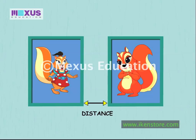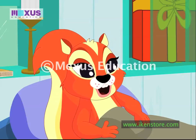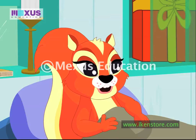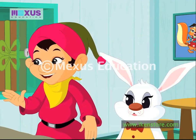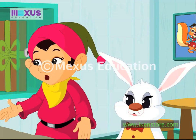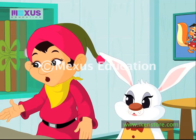So, is this the distance that we have to measure now? You are right, Bunny. Now, observe how I measure the distance between the frames with my fingers. The thumb touches Judy's frame. So, the two frames are at a distance of five fingers from each other. Isn't that simple, Bunny? Now, we can easily know the distances between things.